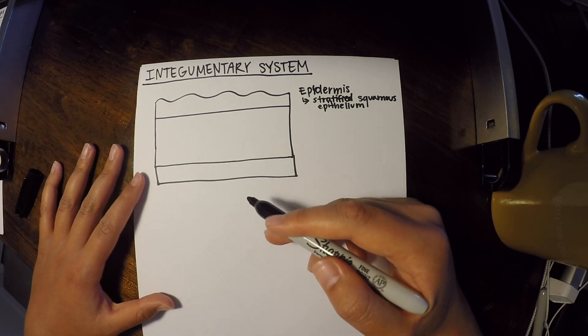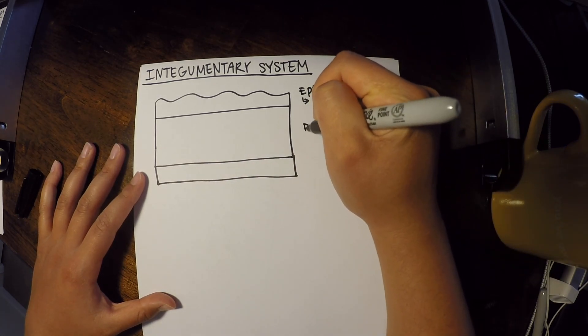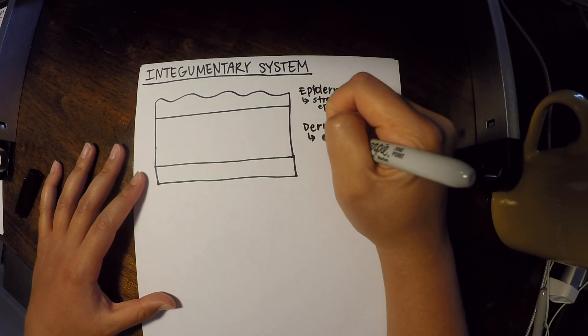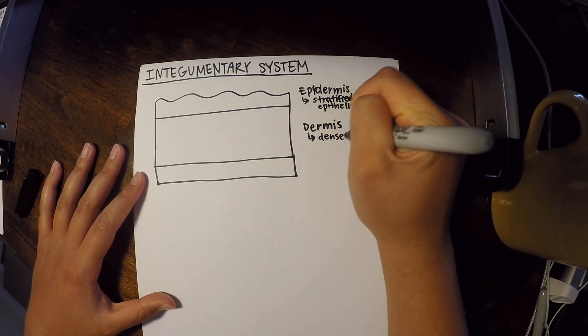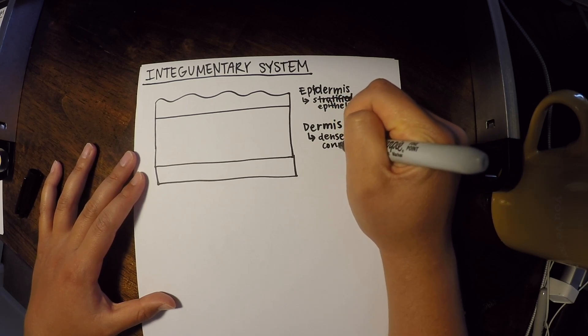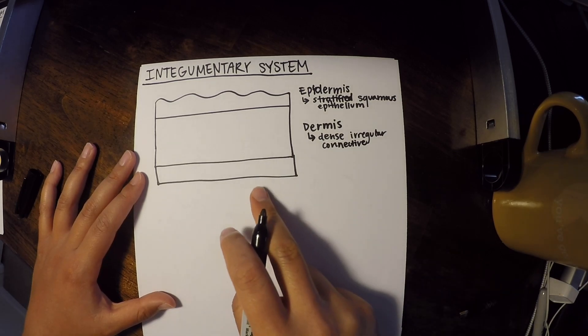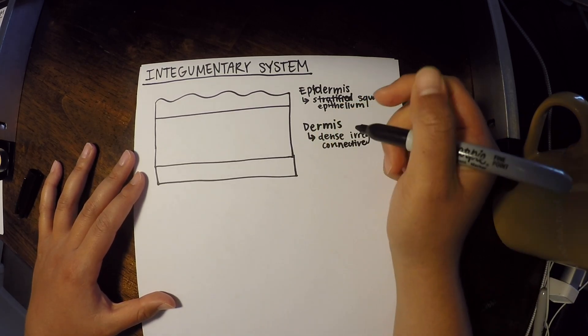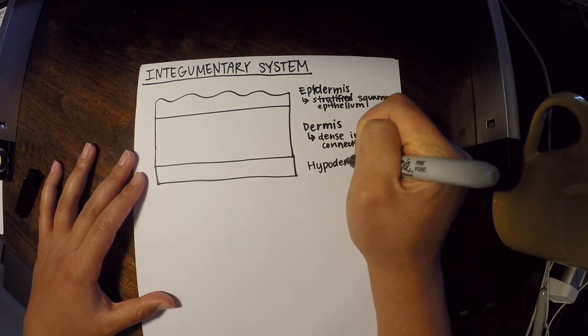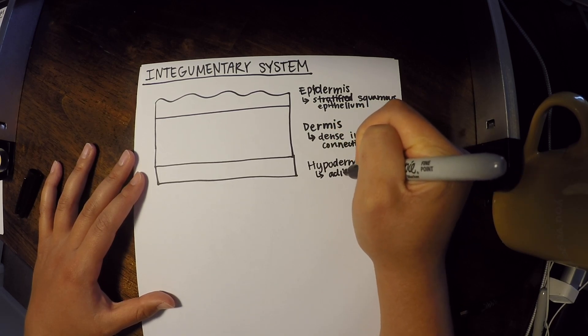So it's like the most superficial layer of the skin. Now this middle layer right here is called the dermis. It's also the thickest. And the dermis is composed of dense, irregular connective tissue. Now the bottom layer is called the hypodermis. Remember the hypo prefix means below. And it's composed of adipose.